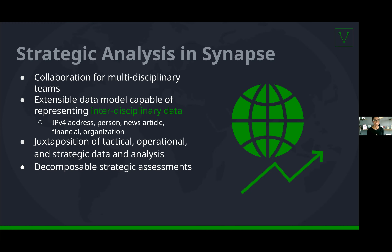A lot of platforms on the market can easily support an IP address or a URL, but what about more abstract data like a WHOIS record or a cryptocurrency transaction? Synapse is powerful because it's able to represent data at higher levels of abstraction. When you're analyzing threat data, you're looking at people, personas, and org vitals to figure out why they're targeting an industry and what regions they operate in. You're trying to model attacks and attack campaigns. Synapse makes that easy, and those strategic data elements can be linked back to operational and tactical data elements like files, commands, and domains — so you can juxtapose that data, rack and stack it, and analyze it to identify trends.